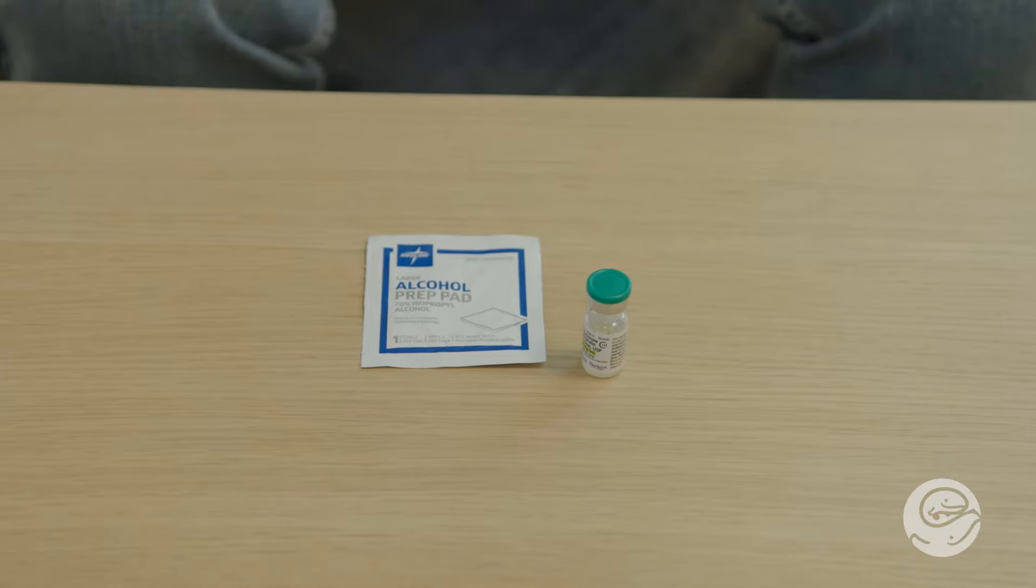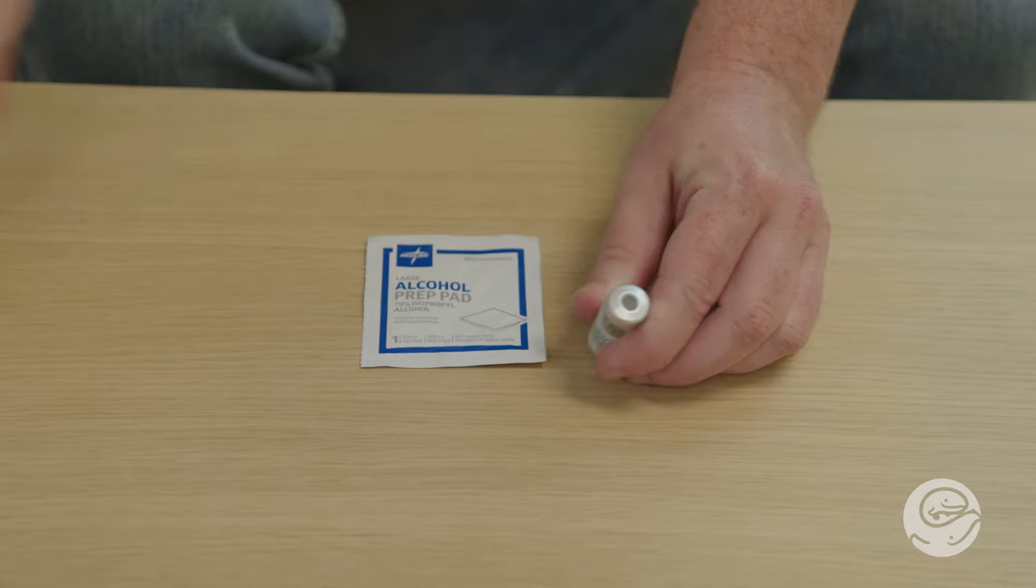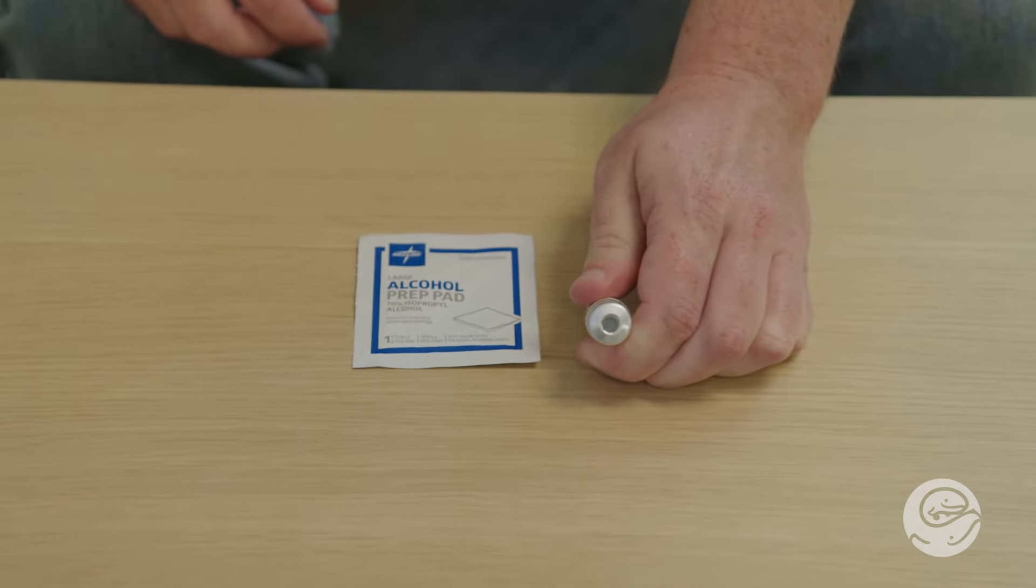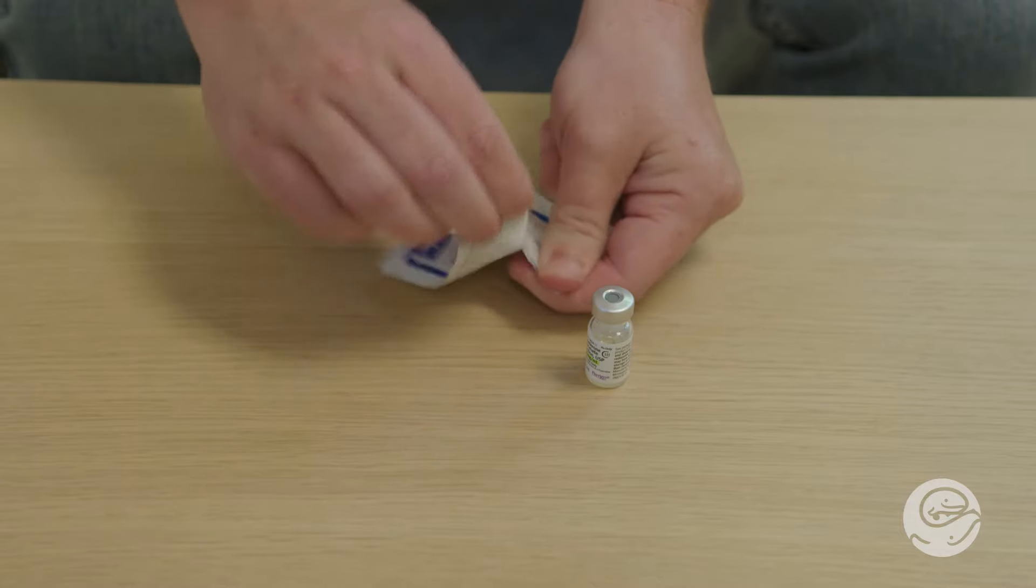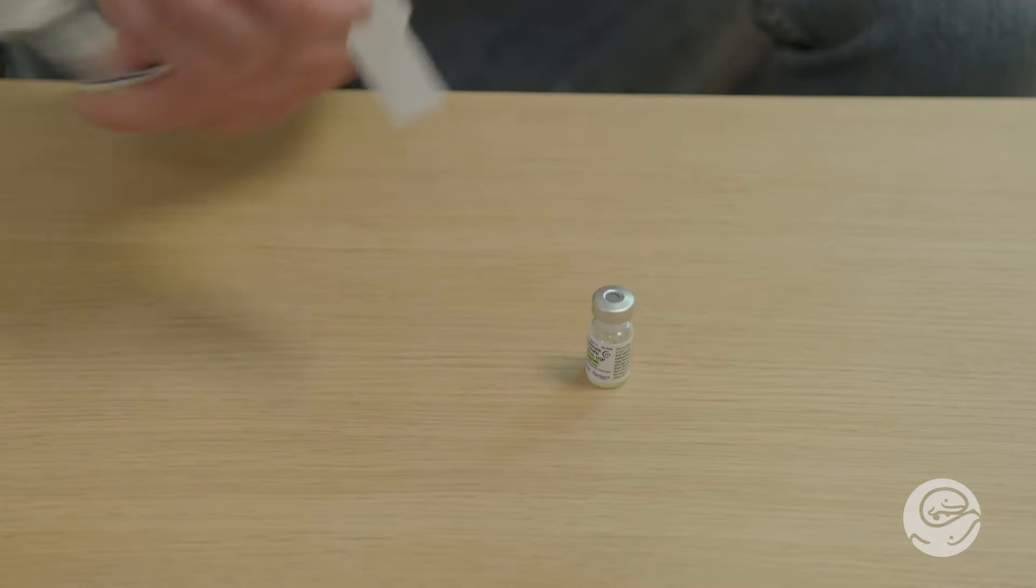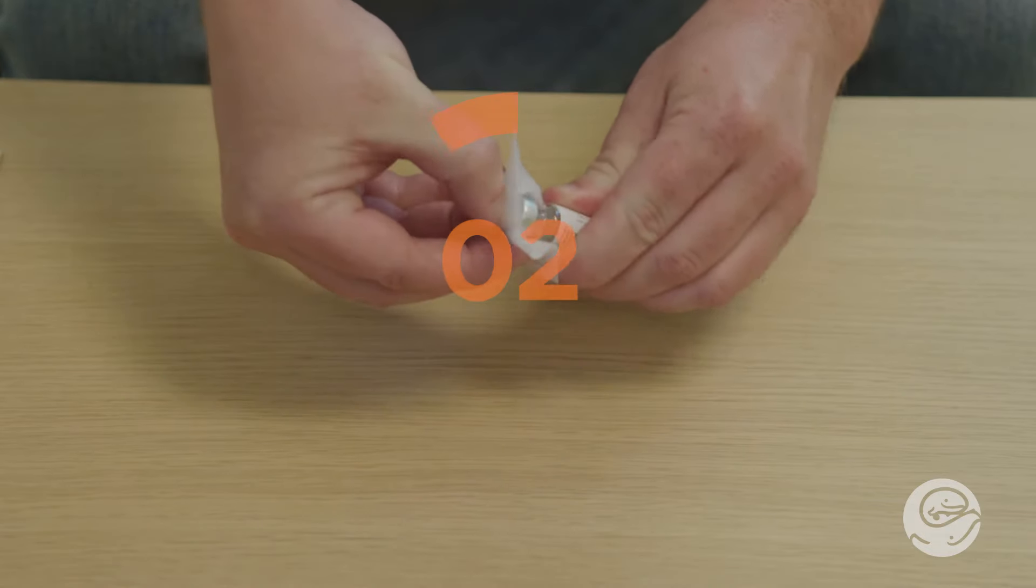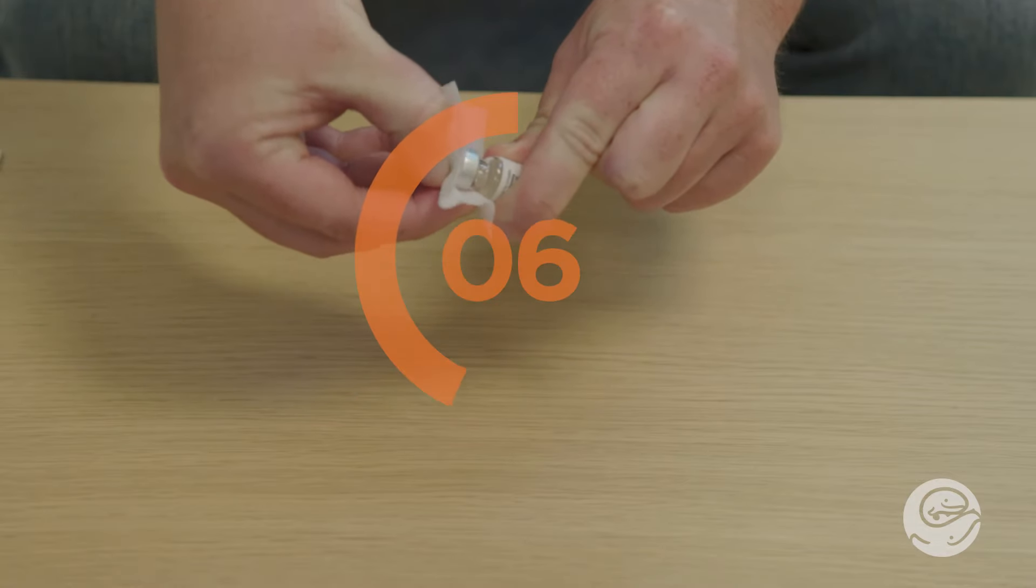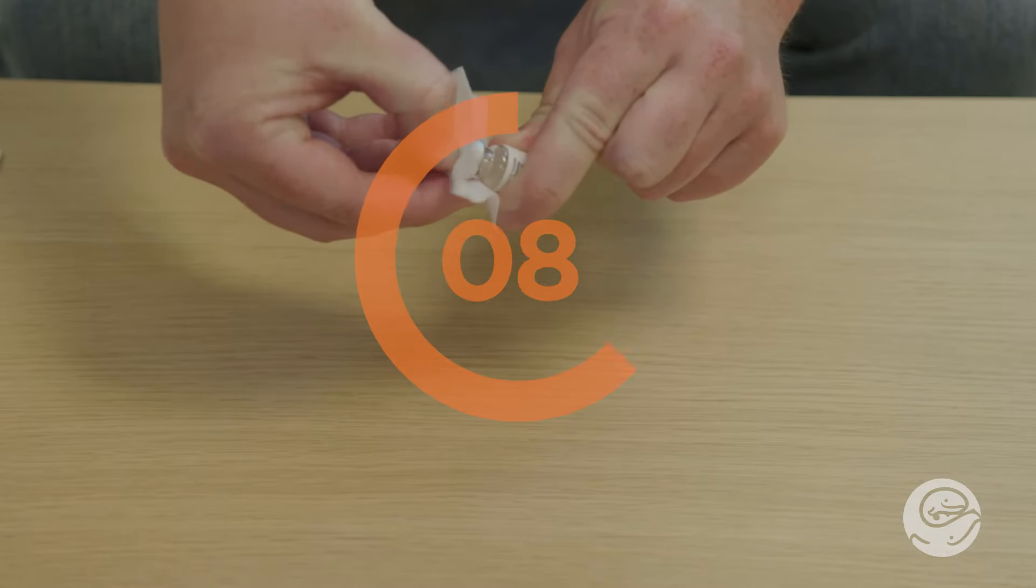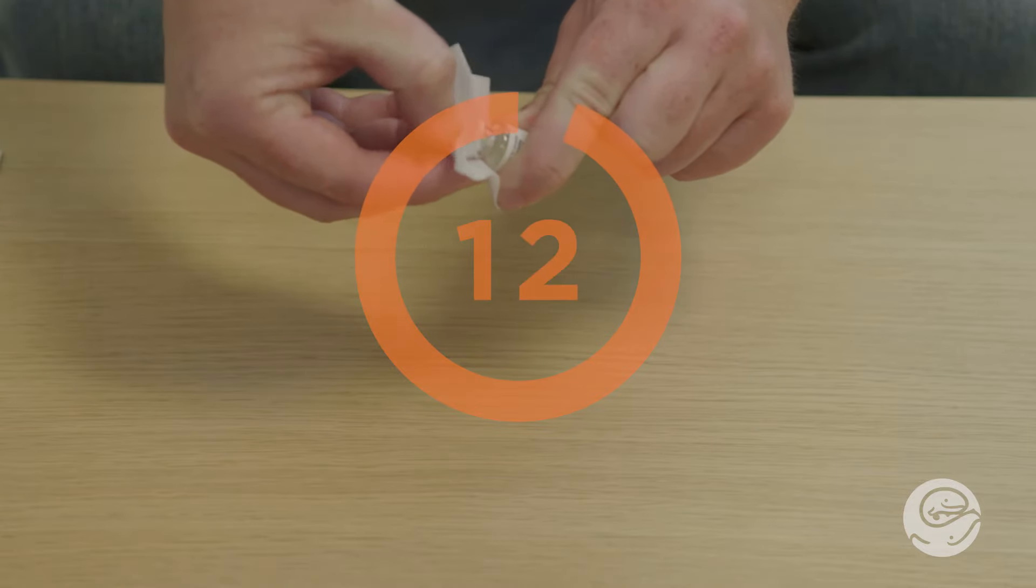If your vial is new, remove the plastic cap from the top. The cap does not go back on. Using an alcohol wipe, clean the top of your vial for 15 seconds. Then, let it dry for 15 seconds. This is also part of the cleaning process.